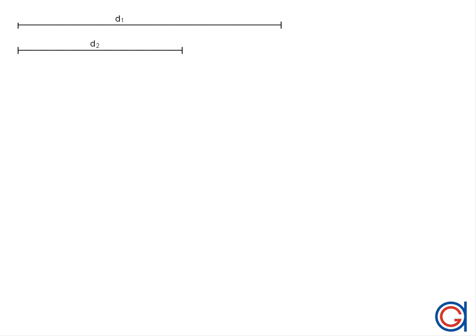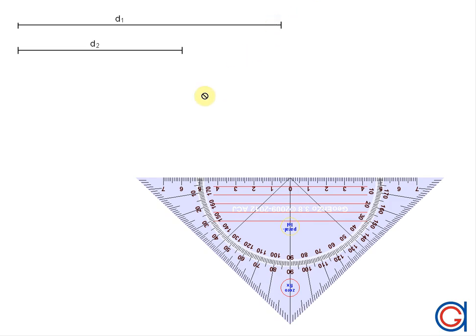Hello, today we're going to learn how to draw a rhombus giving its two diagonals, D1 and D2, as can be seen here at the top of the screen.